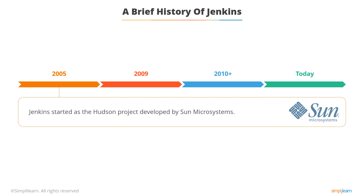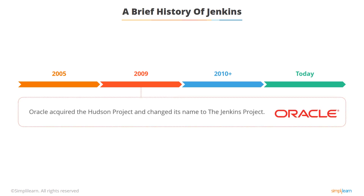For those of you who are not familiar with JavaOne, it is an annual conference organized by Oracle Corporation to discuss Java technologies. Intrigued by its success, Oracle then later acquired the Hudson project from Sun Microsystems. After political disputes over project ownership, it was then decided to change the Hudson project name to Jenkins.